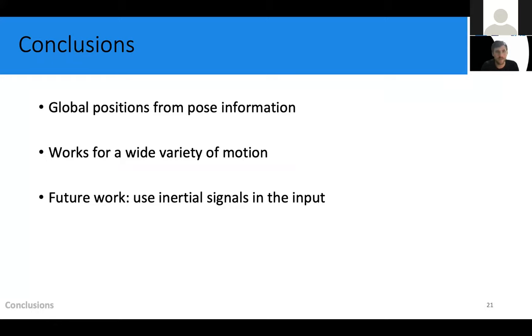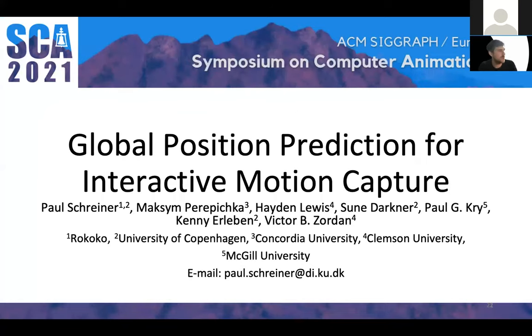Finally, an interesting case for the future could be to add dynamic information to the input. This could be done by adding joint acceleration or angular velocity signals, which could enable the network to learn highly dynamic behaviors, such as long flight phases in the motion. Thank you all for listening. If you have any questions, I'll be happy to answer them.